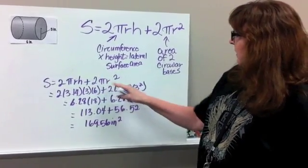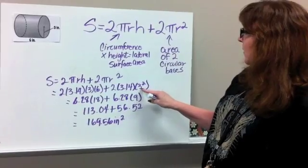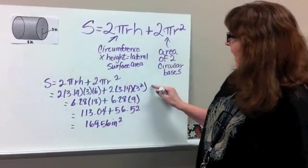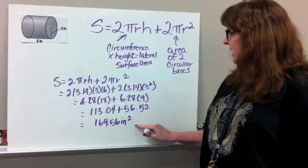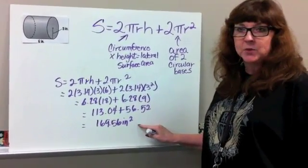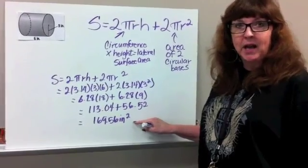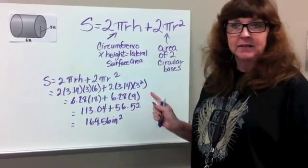plus 2 times pi, 3.14, times our radius, 3 squared. And then just go ahead and work it out all the way down, and you get down to where you get 169.56 inches squared, which is exactly what we got when we used the net in the last part.